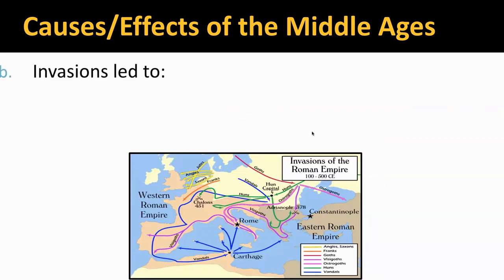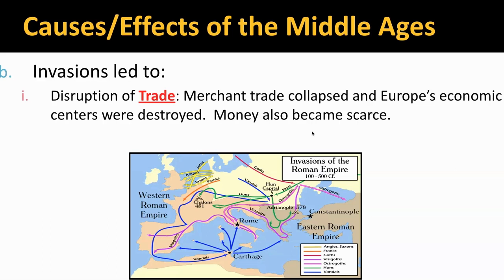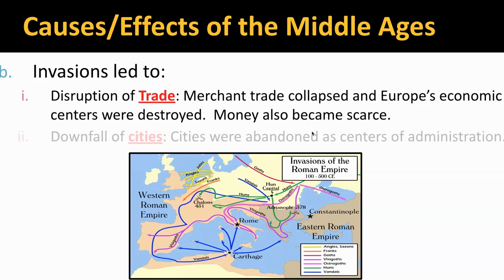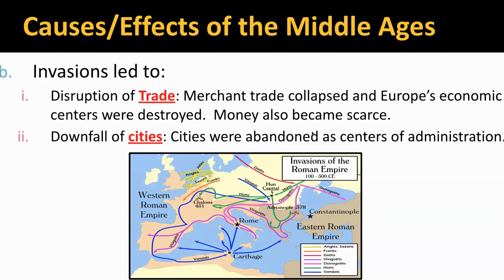Those invasions led to a lot of major changes. First, there was disruption of trade — merchant trade collapsed and Europe's economic centers were destroyed. Money also became scarce. If your economic centers are destroyed, we're talking about your cities. Cities were abandoned as centers of administration. One statistic I've seen is that the population of Rome went from a million people all the way down to 10,000 — a 99% drop. Cities weren't safe anymore. Germanic peoples went there, and if they needed food, water, or shelter, they often just took it. So it wasn't safe to be in the cities, and that disrupted trade and overall economic centers.